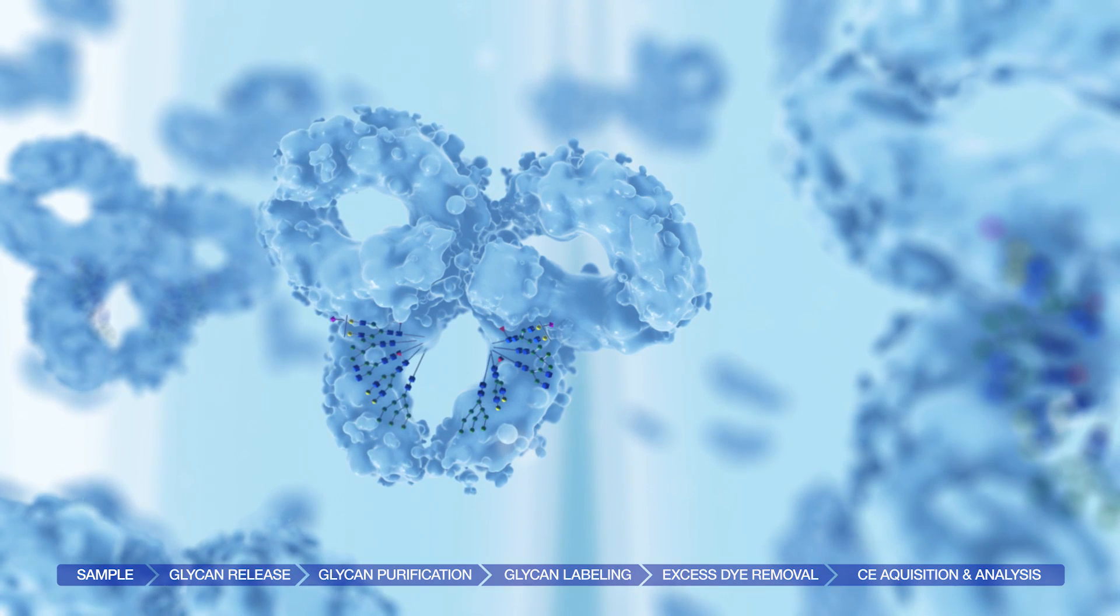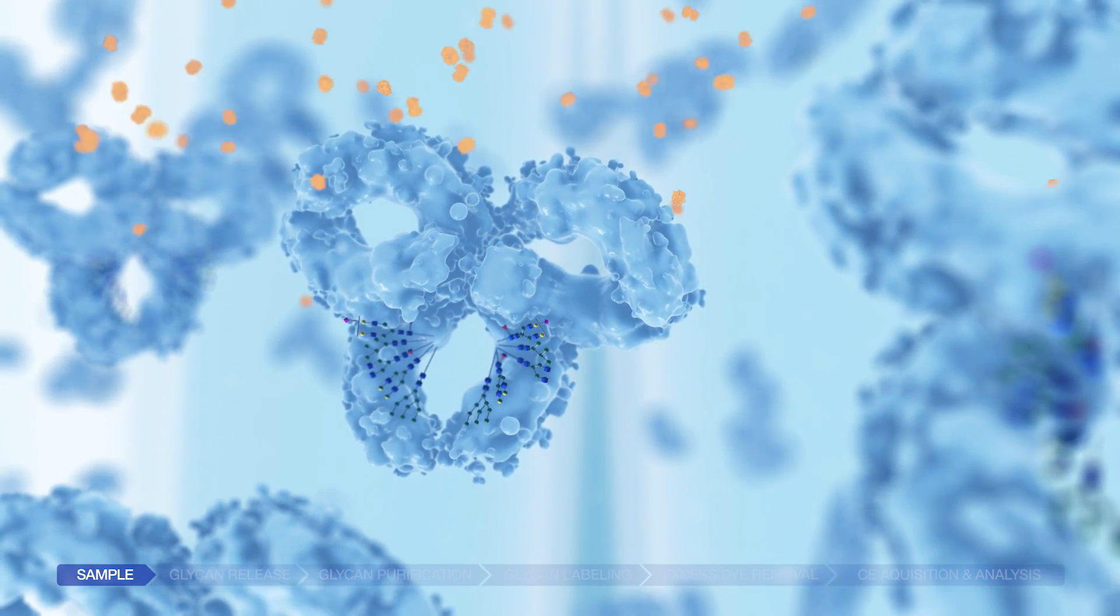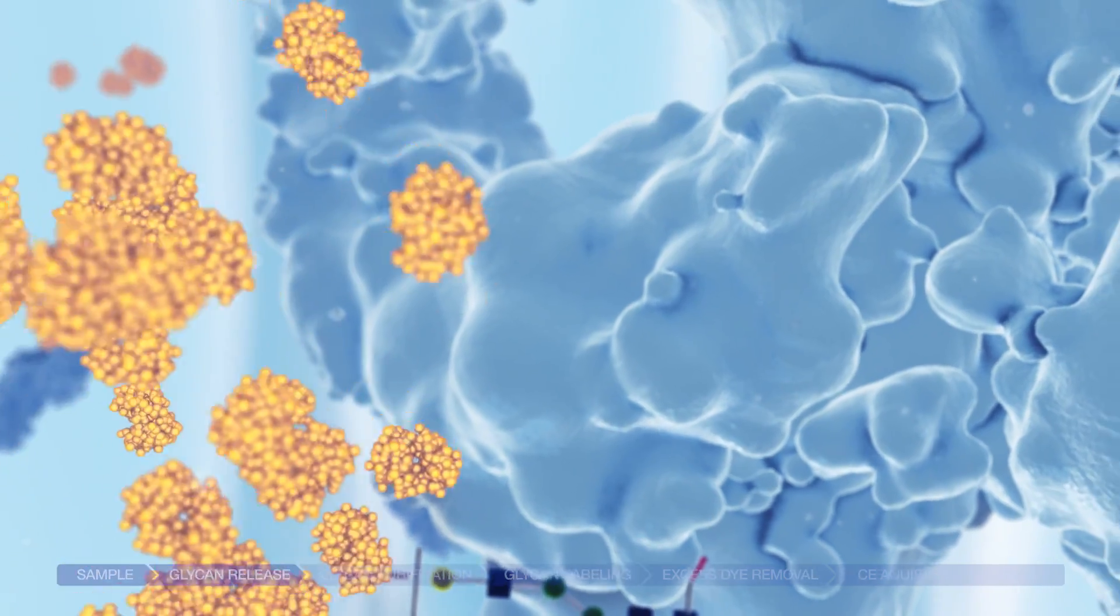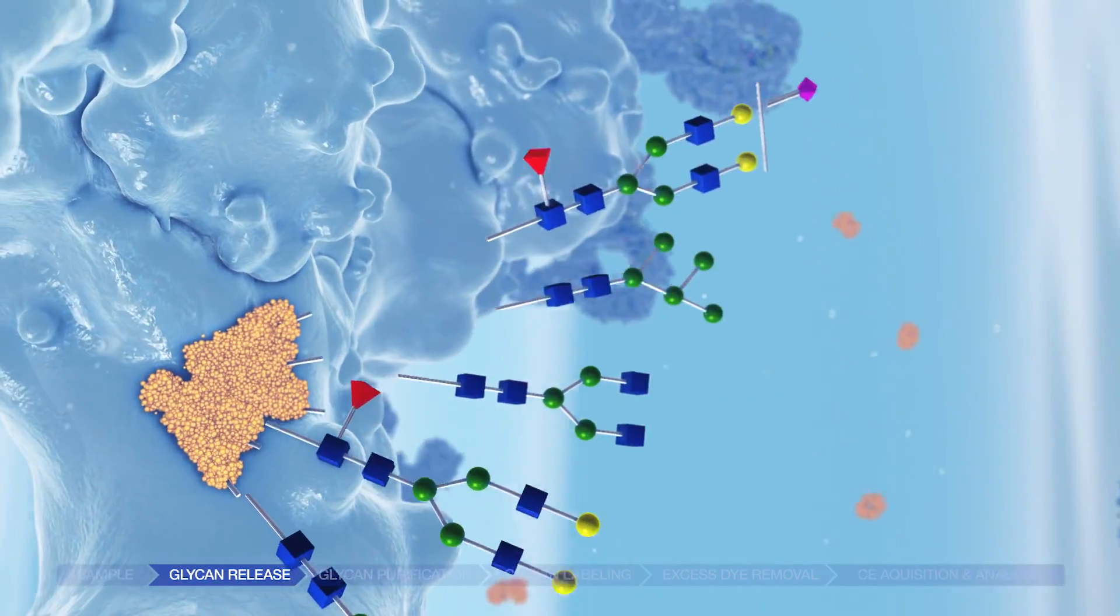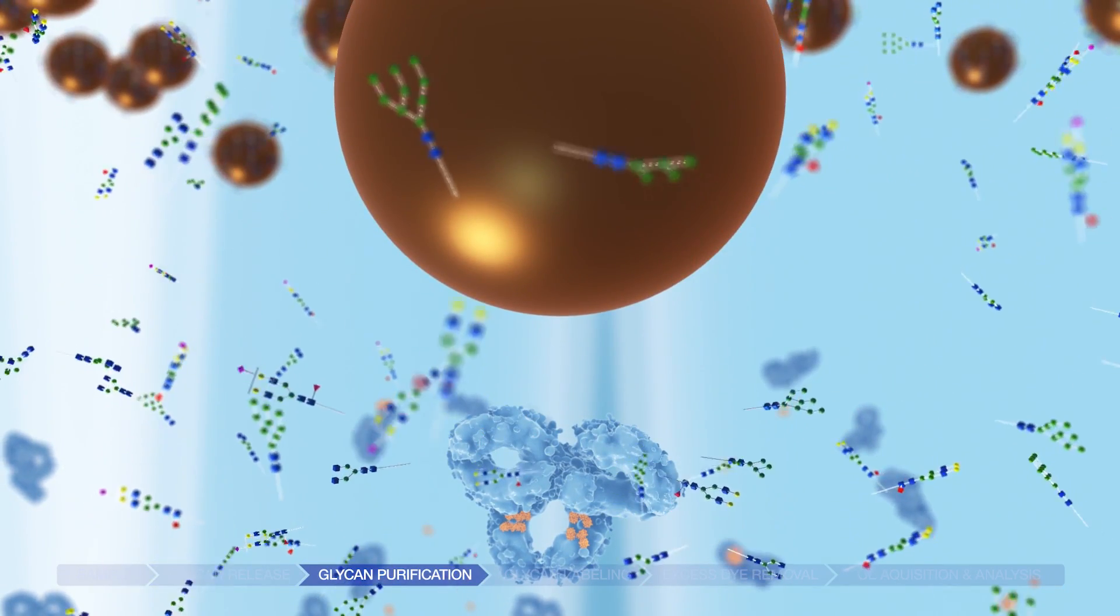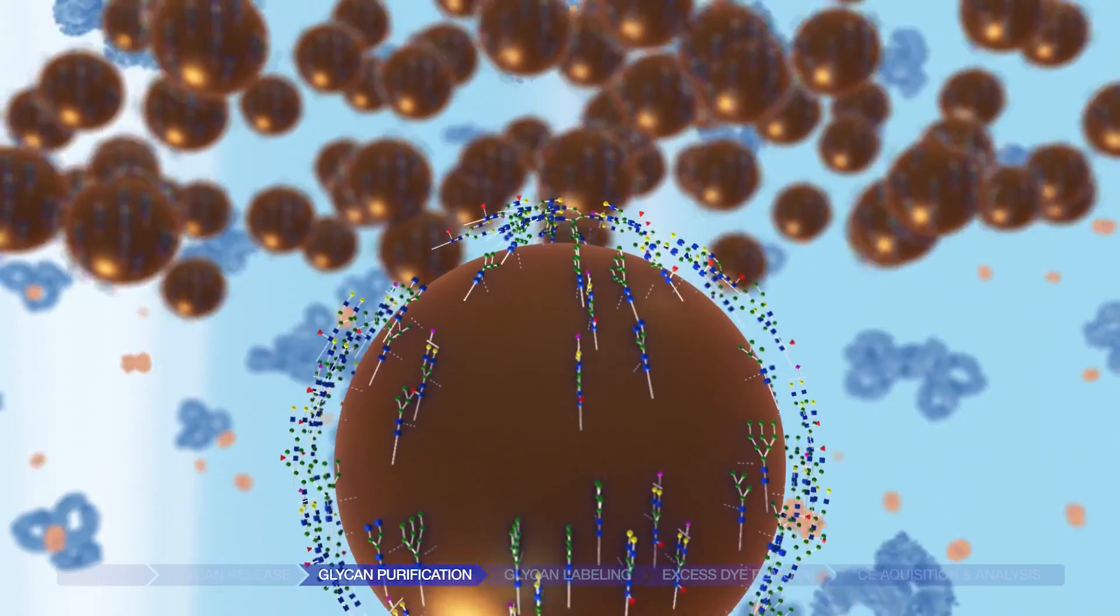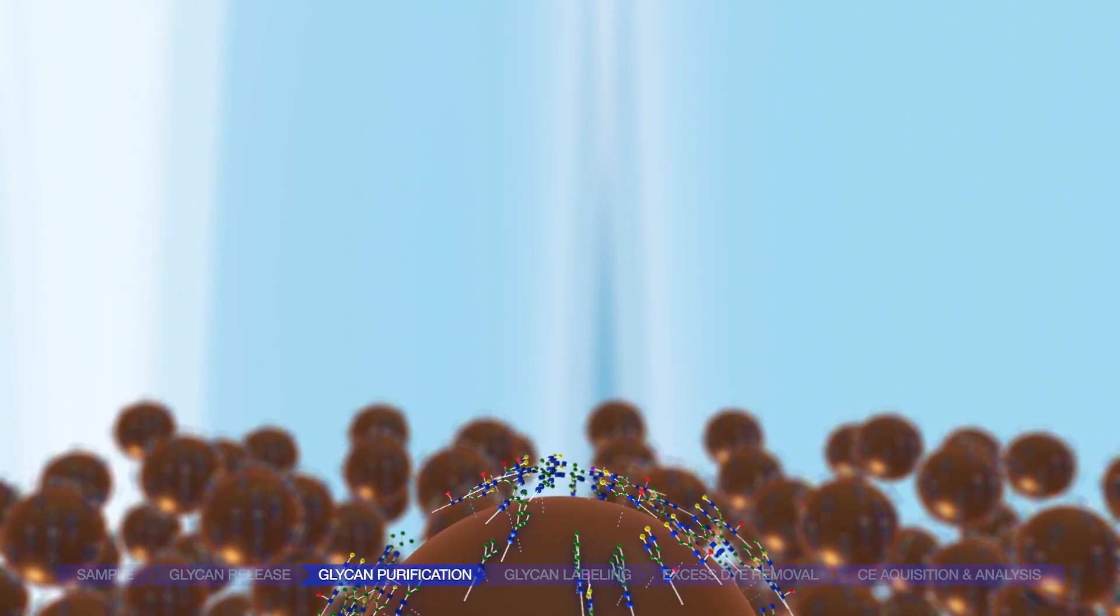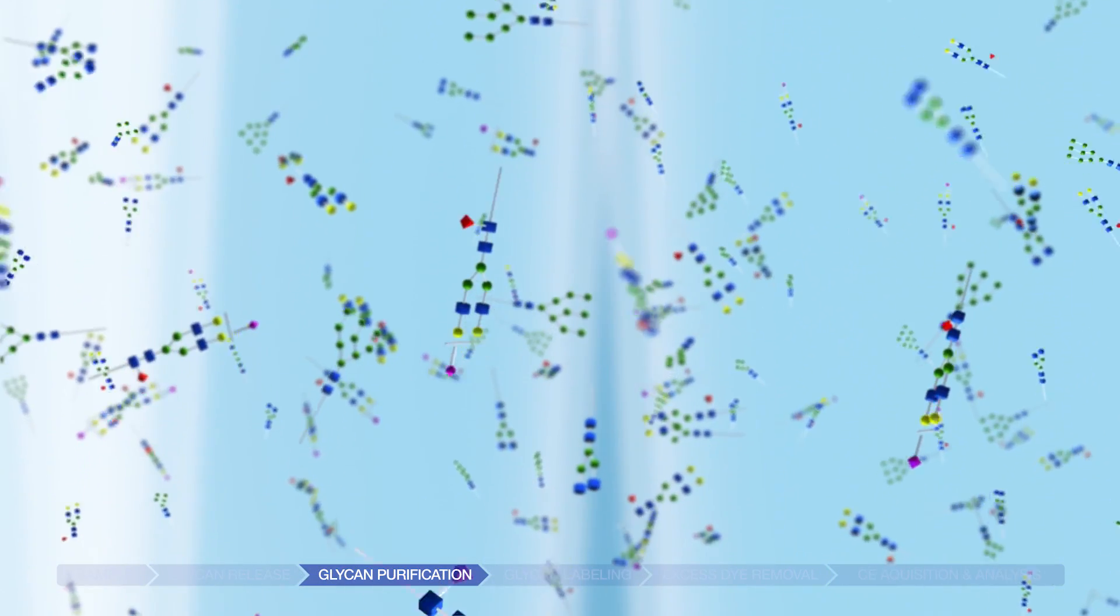The workflow begins with the glycoprotein sample. PNGase F enzyme is added, and the enzyme cleaves the N-glycans from the protein. Glycan Assure magnetic beads are added, and the glycans bind to the beads. The solution is pelleted and eluted, separating the glycans into a purified solution.